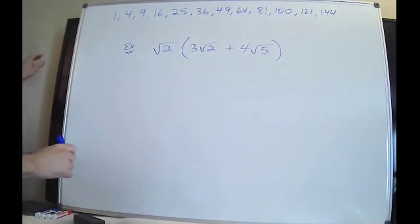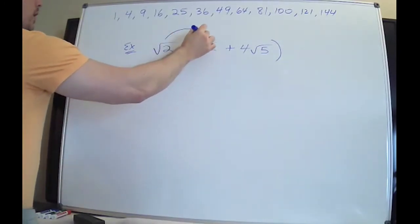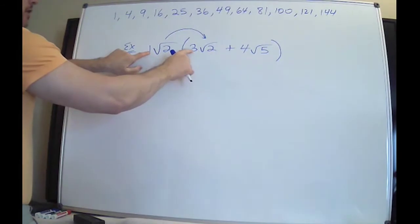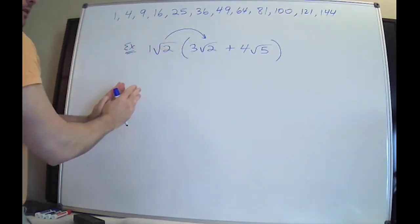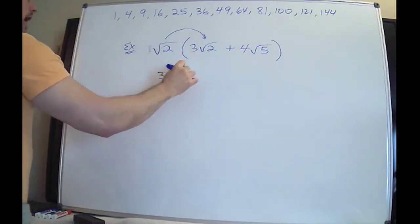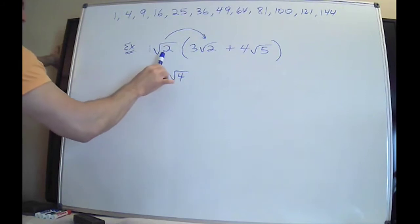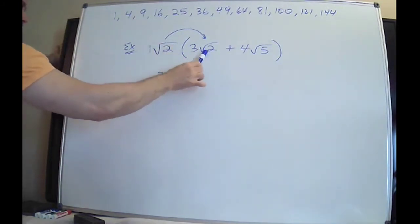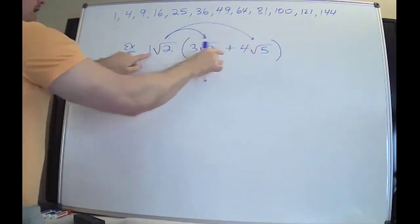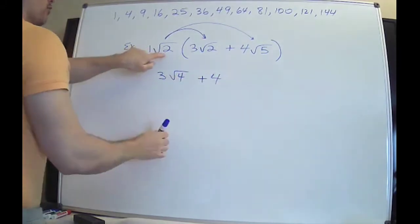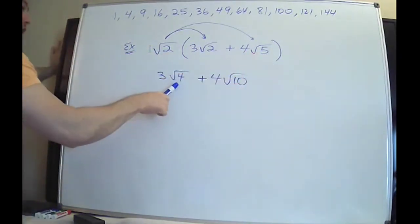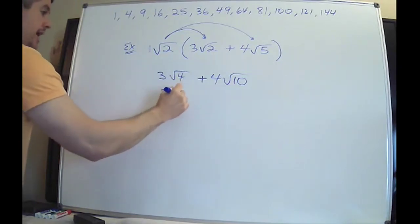Third example — continuing to multiply, distributing one at a time. Put the little one there; one is on the outside, three is on the outside. Numbers on the outside don't go in — you multiply outside numbers together and inside numbers together. One times three is three; radical two times radical two is radical four. Now for the next term: one times positive four is positive four, and radical two times radical five is radical 10.